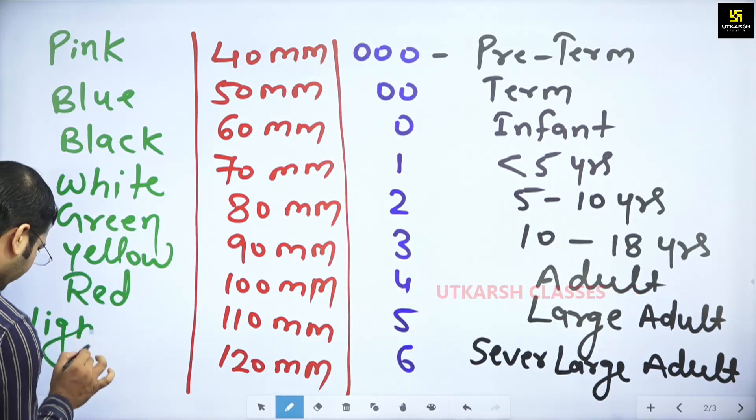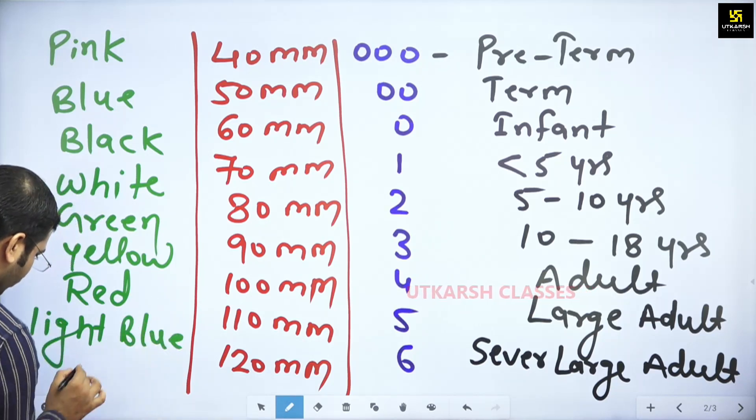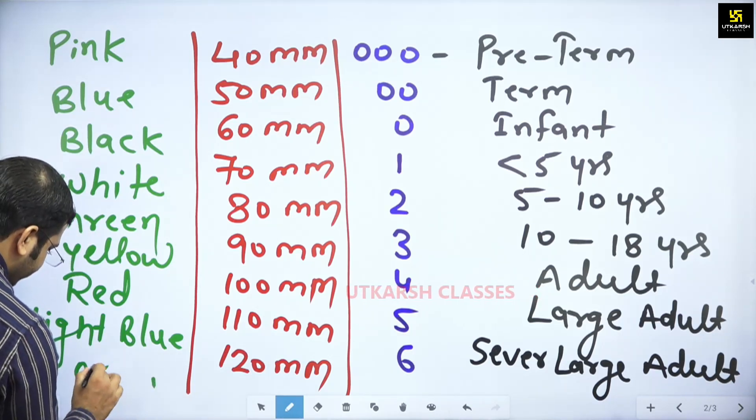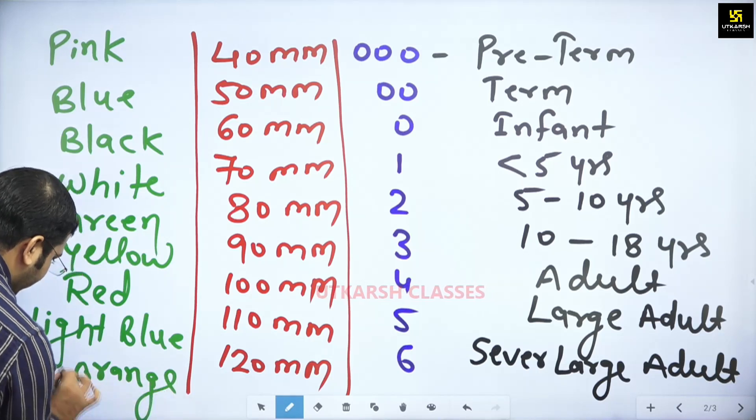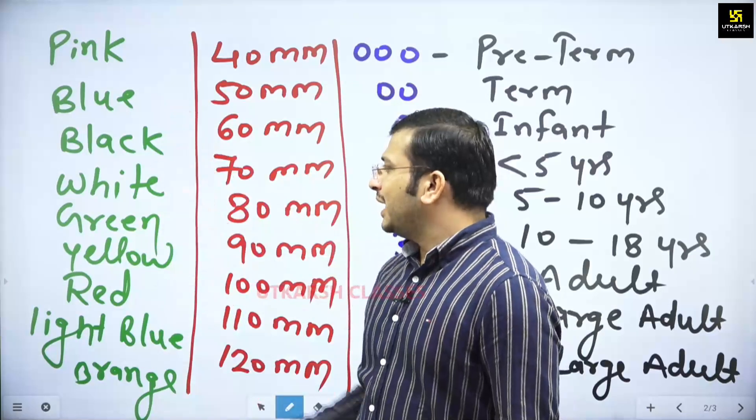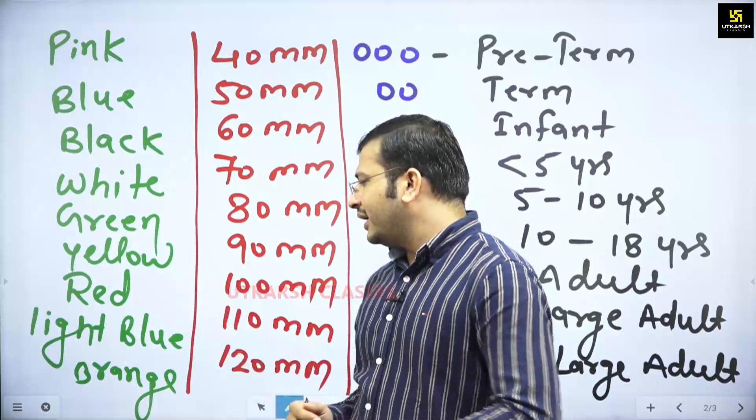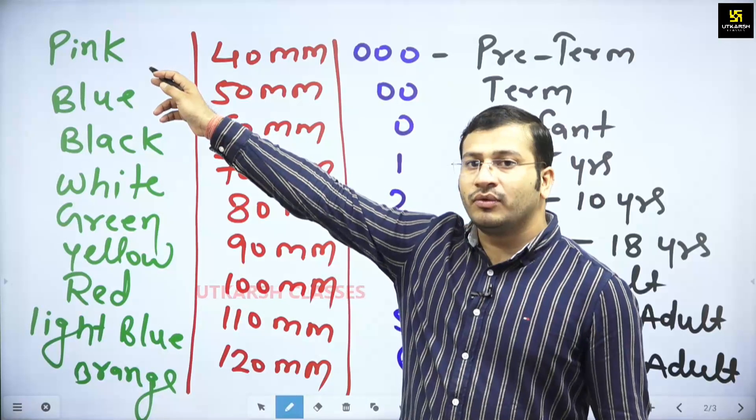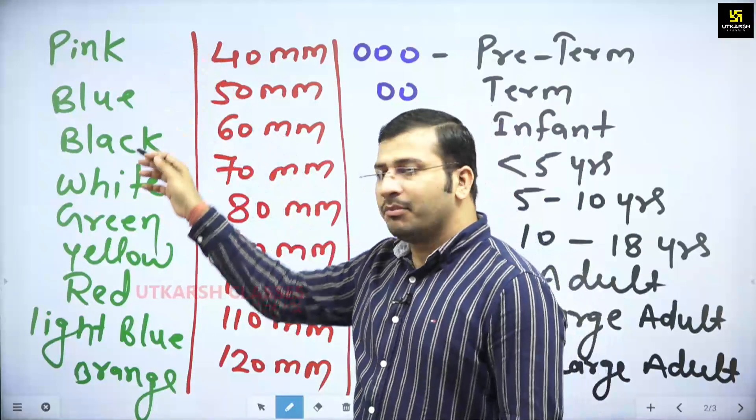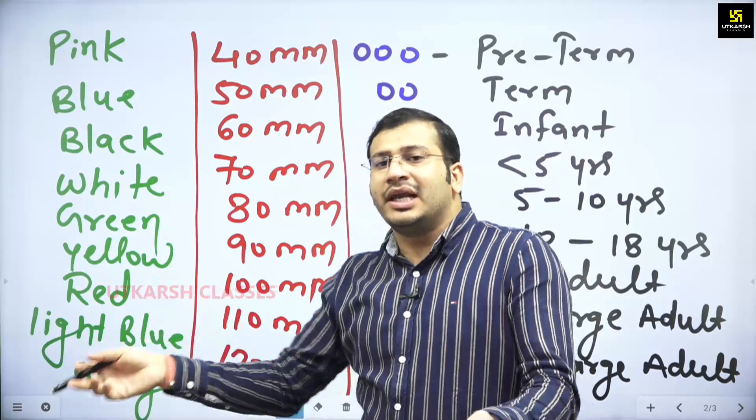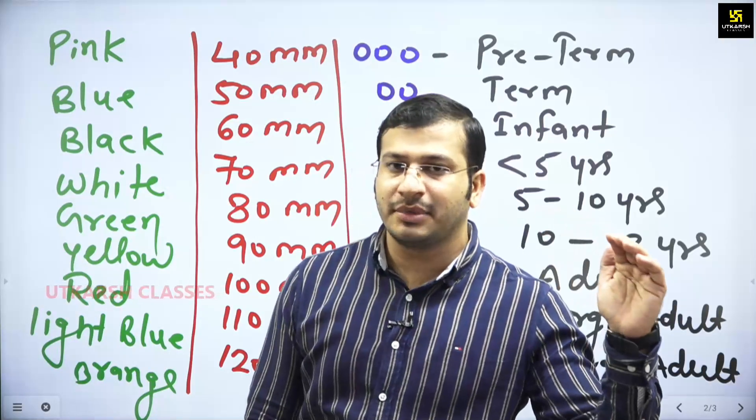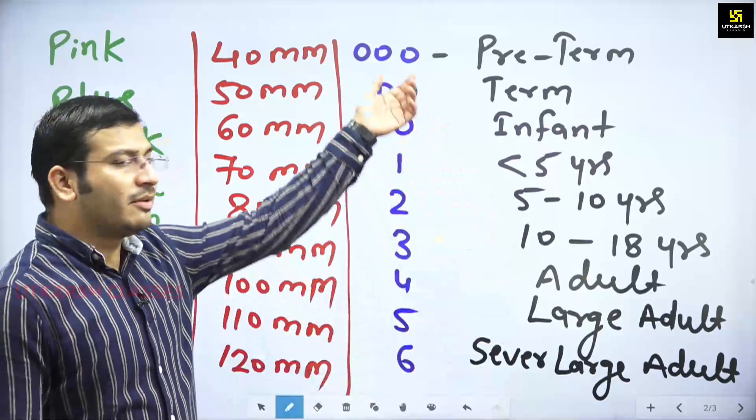Then red, then light blue. And the last you will see orange. Orange. If we see the color: pink, blue, black, white, green, yellow, red, light blue, orange.